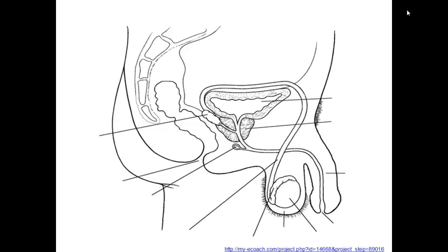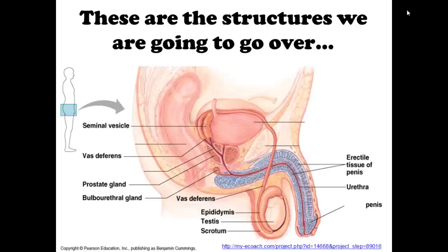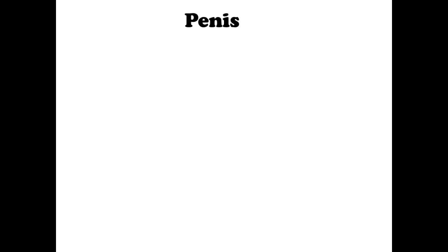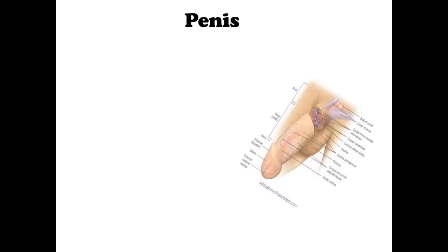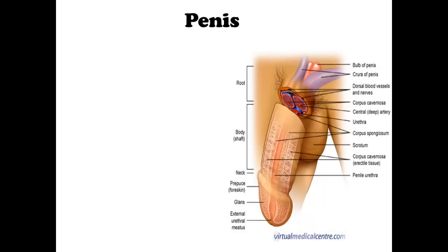Moving on to the next slide. These are the structures we're going to go over today. Here's a color image — you don't have to write all these down yet, we're going to go over each of these. We're going to start with the penis.